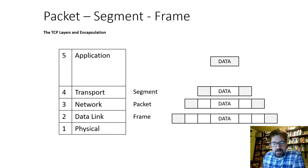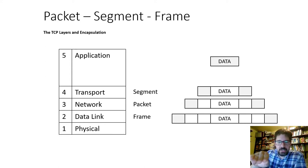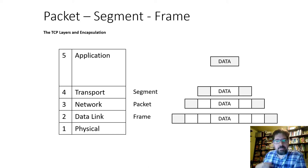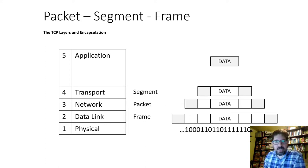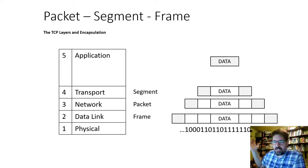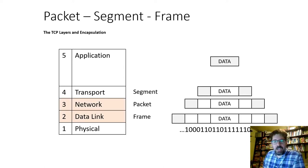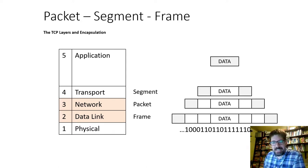From here on I'll refer to these as either a segment, a packet, or a frame. The segment has a header and footer; the packet adds another header and footer for the network layer; and the frame adds yet another header and footer at the data link layer. At the physical layer, it's just ones and zeros — encoded somehow to transmit across a wire, wirelessly, or through various media. I'll mostly focus on the network, data link, and transport layers.